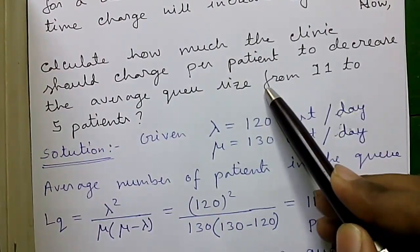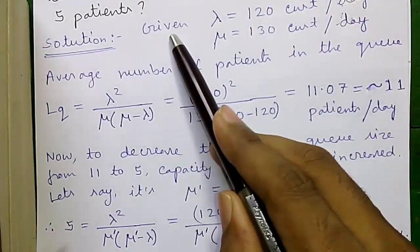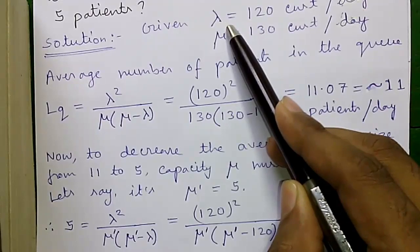Now calculate how much the clinic should charge per patient to decrease the average queue size from 11 patients to 5 patients.